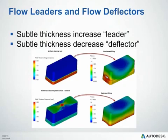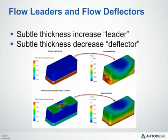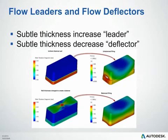Flow leaders and flow deflectors can also be useful tools. Flow leaders are local increases in your nominal wall thickness, whereas flow deflectors are local decreases in wall thickness. When a part cannot be balanced by gate placement alone, it is useful to slightly change the wall thickness to either promote or retard flow in certain directions. This allows the filling of the part to be balanced even when flow lengths from the gate to the extremities are not equal, as shown in the image below.